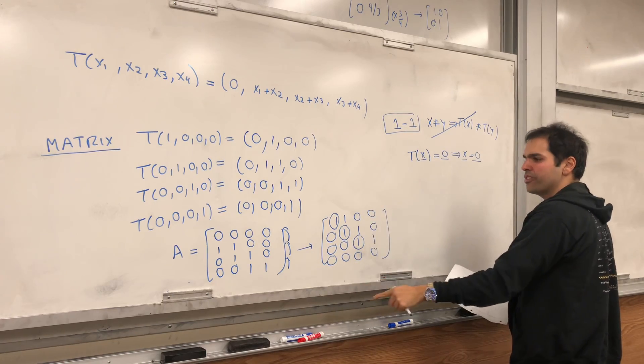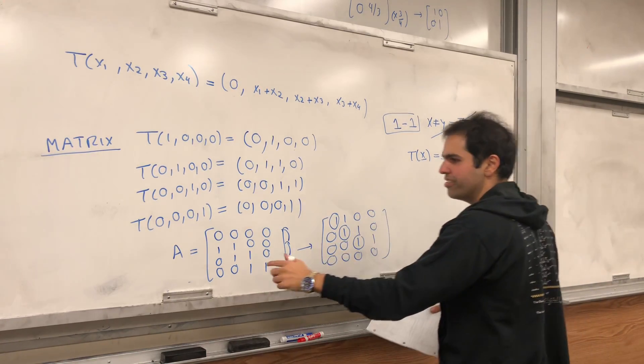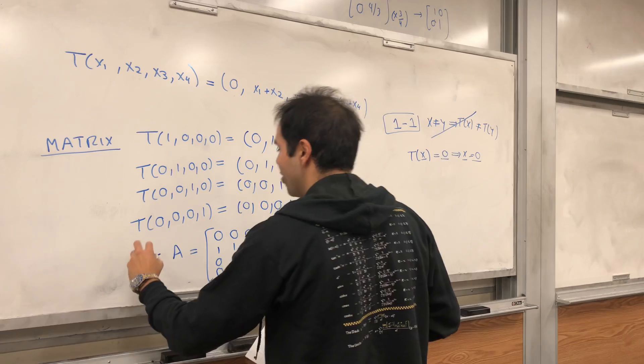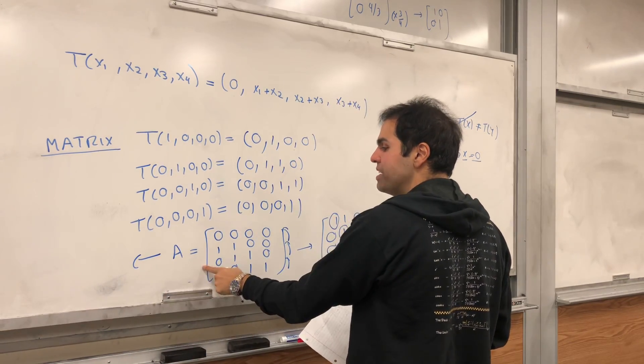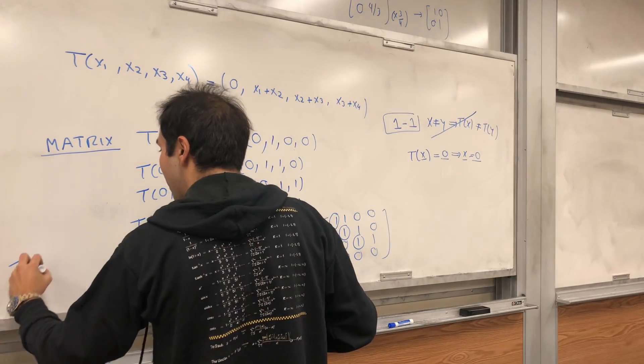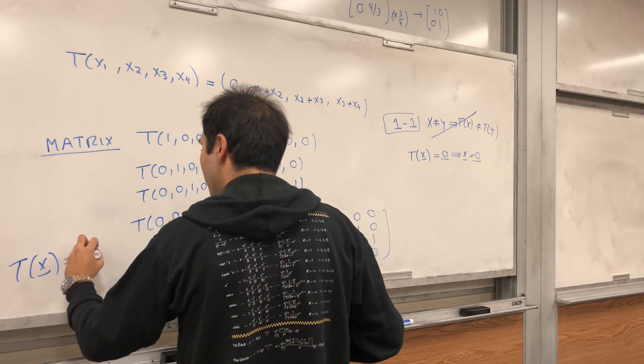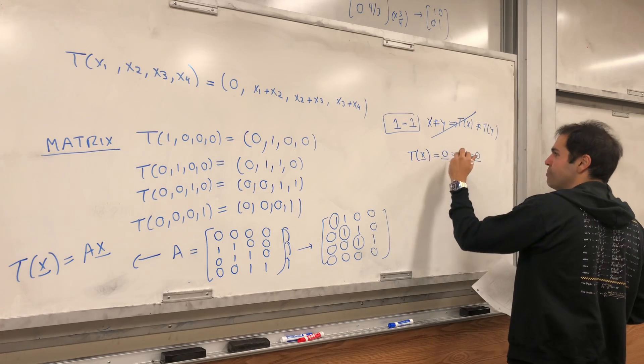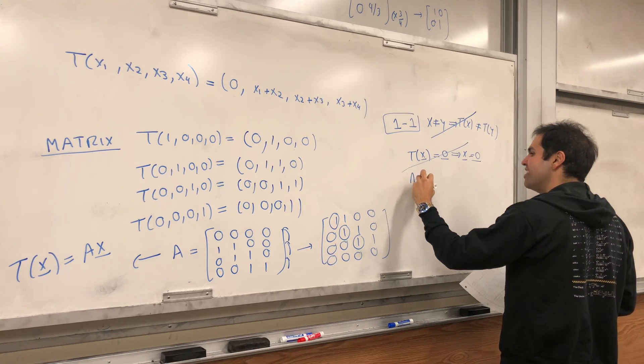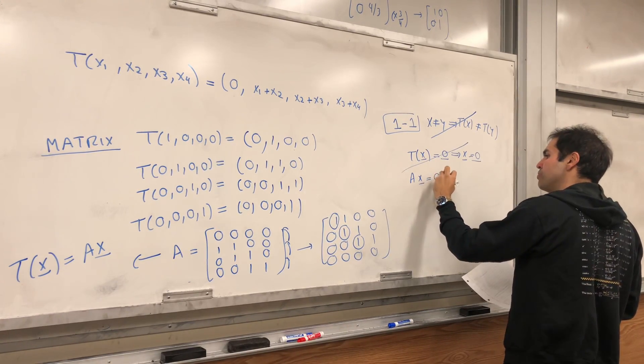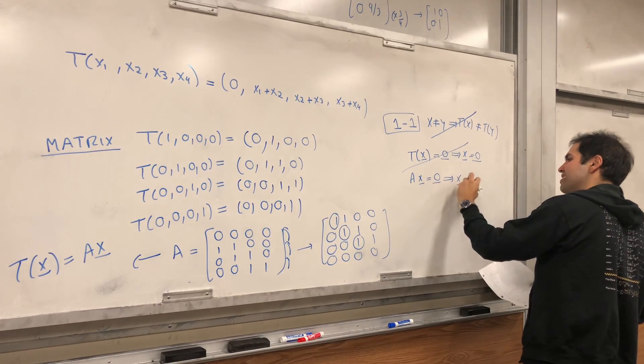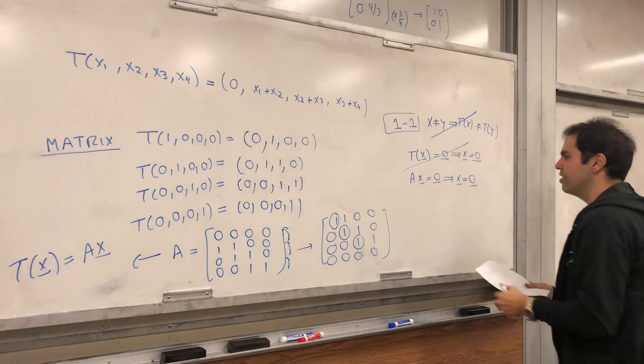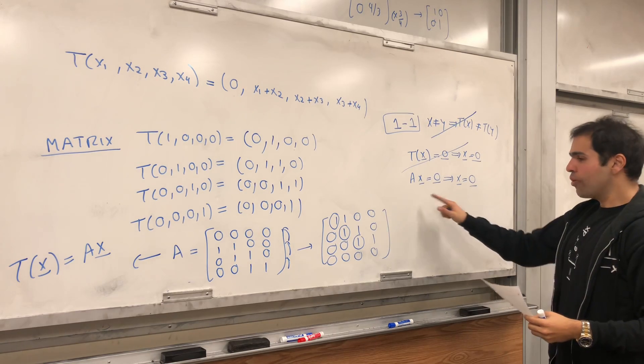But remember, matrices are linear transformations. So what this means is simply t of x is equal to just multiplication by a. So, what this means, again, maybe a better definition, it means ax equals 0 implies x equals 0.